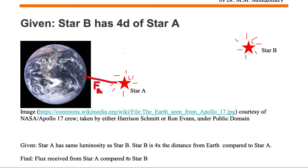We want to compare that to the amount received from Star B, which is at a much further distance. So it's at 4D, whereas Star A is at D.